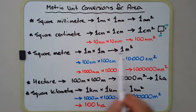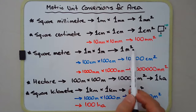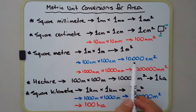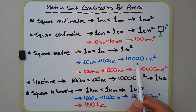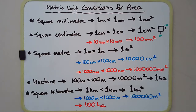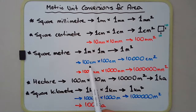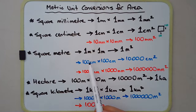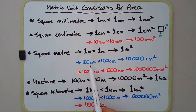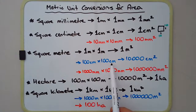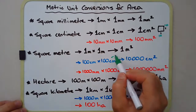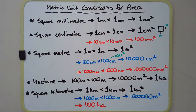Then we have a square metre, which is just a metre times a metre, written as 1 m with a superscript 2. That's also equivalent to 100 centimetres times 100 centimetres, which is 10,000 square centimetres. You're just squaring the length conversion — the metre converts into 100 centimetres, but when talking about area, we need to multiply by 100 squared rather than just 100. That's an important thing to note.